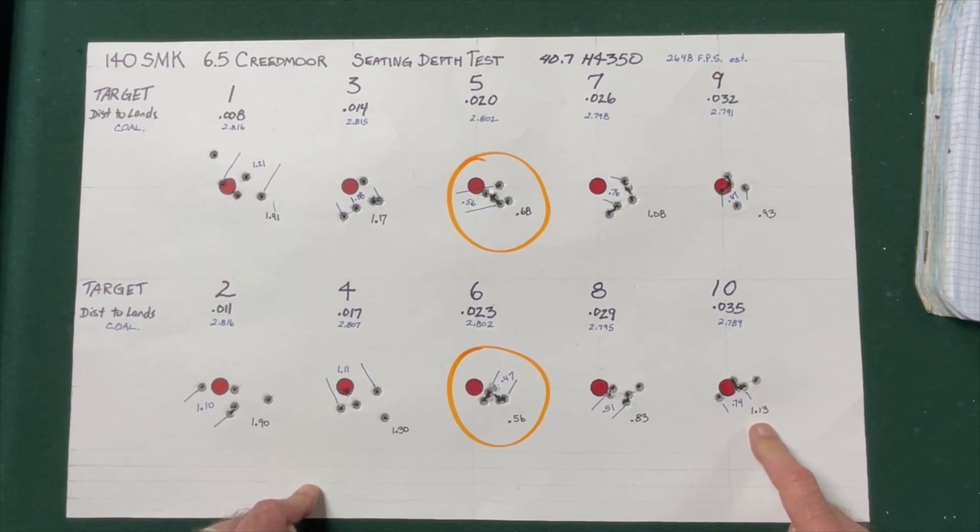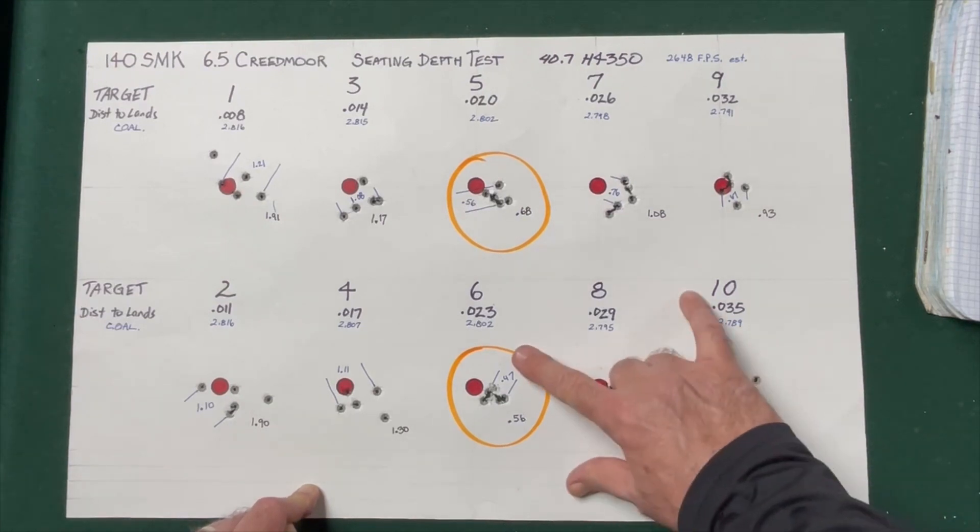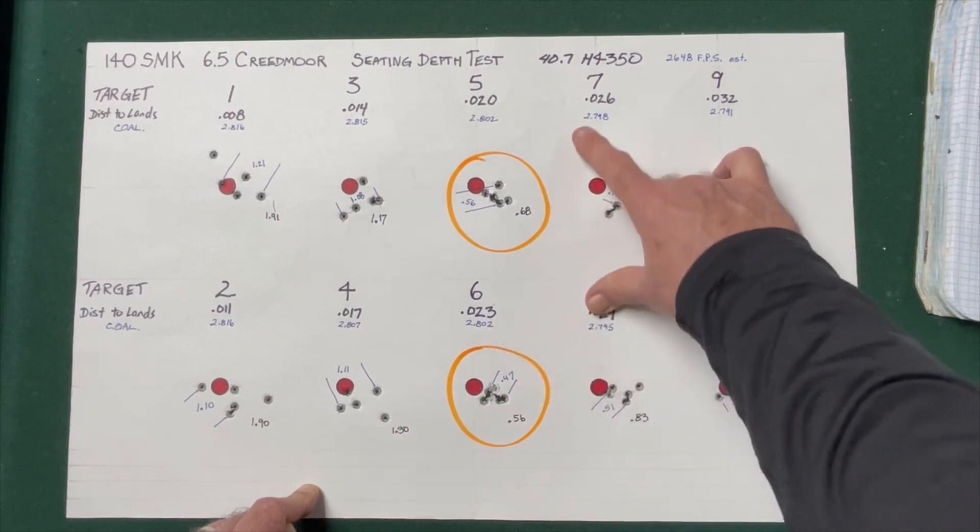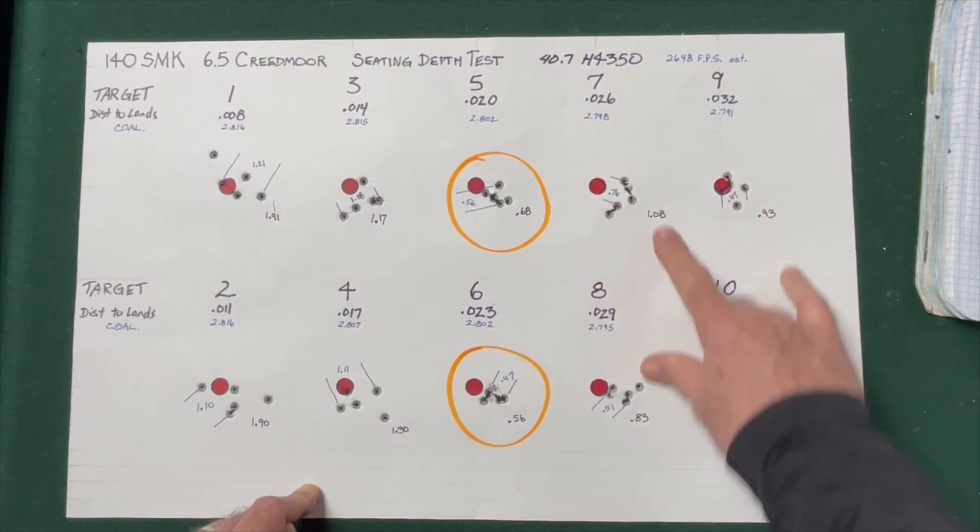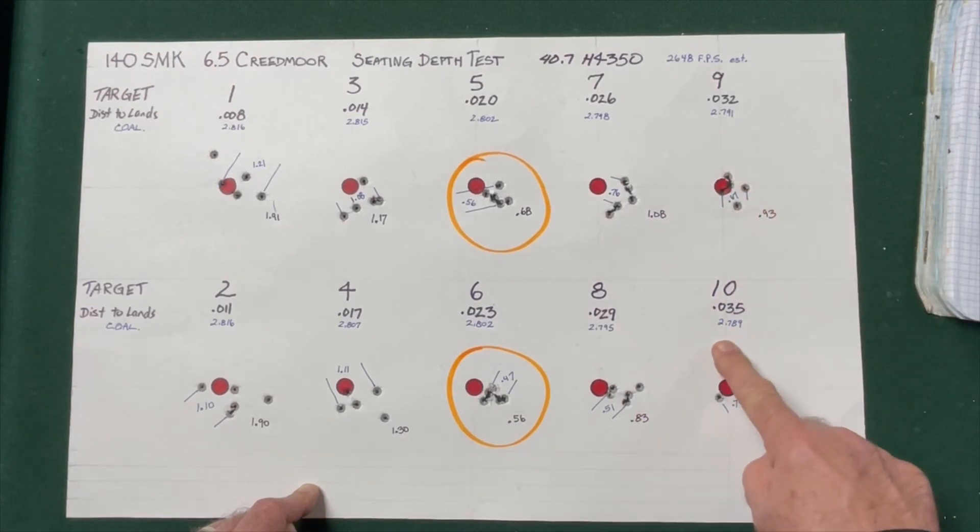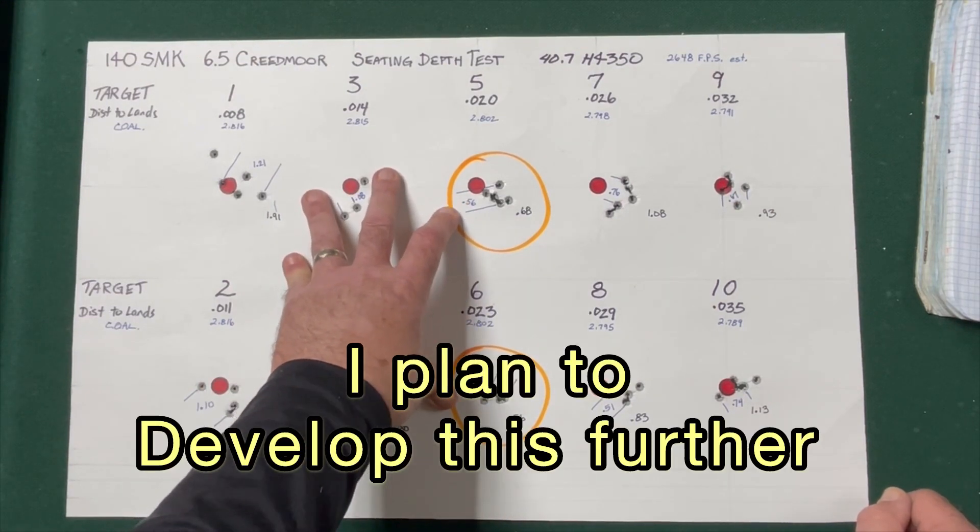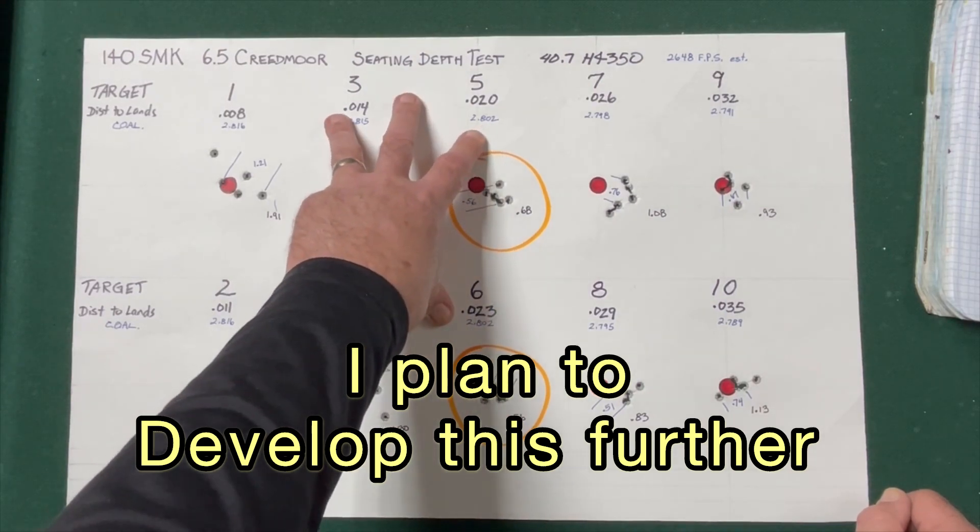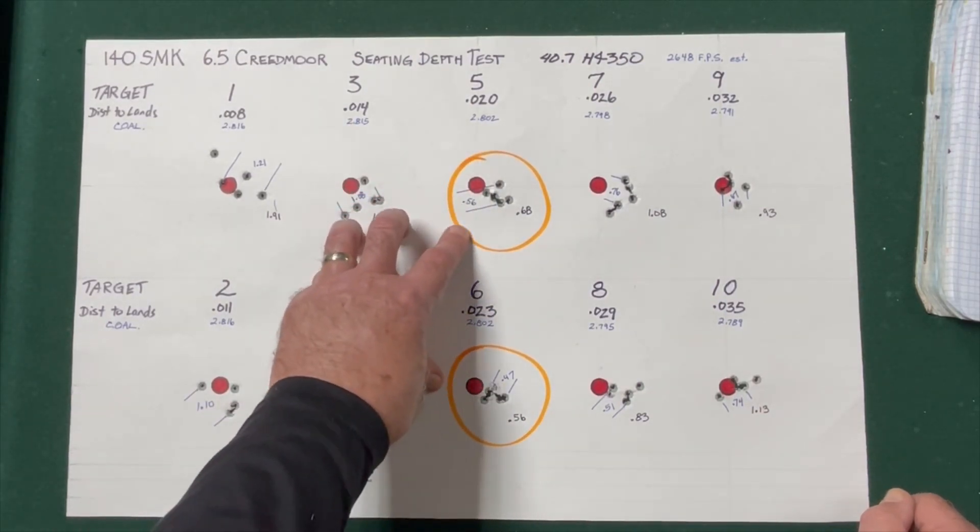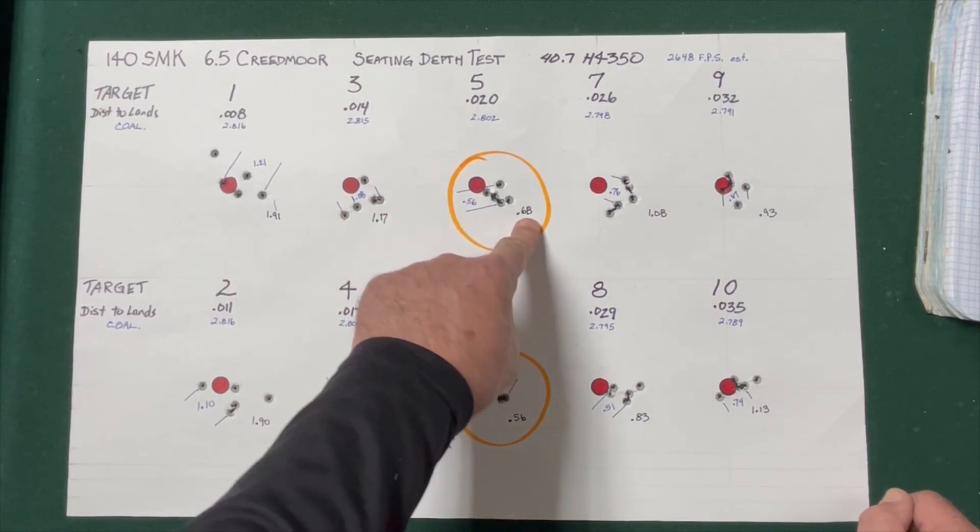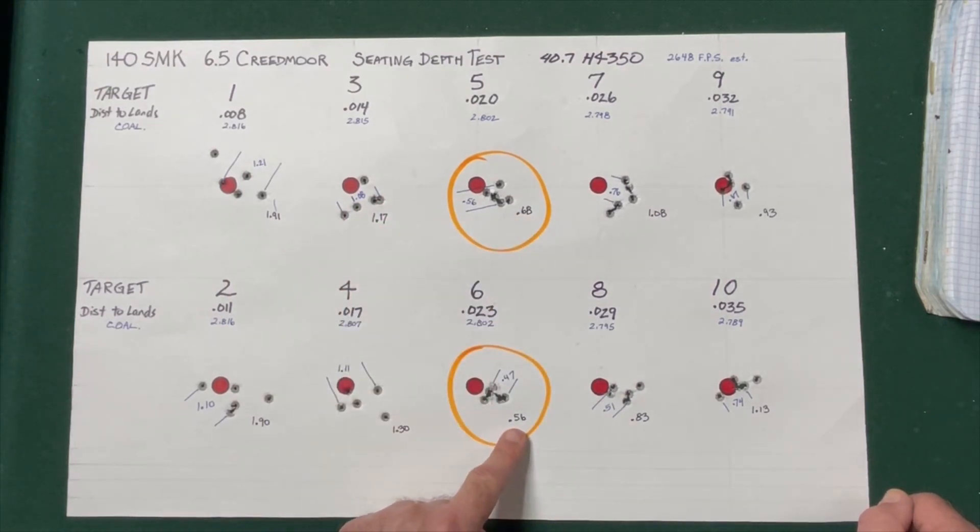It's also interesting to note that as you get further away from the lands, that overall cartridge length gets shorter, because here we were at 2.802, then it drops to 2.798, 2.795, 2.791, 2.789. In any event, the takeaway here is that it appears that, at least for my rifle, the recommended overall cartridge length produces the best results, and that's at 2.8 inches. So I will be loading that in the future, but that did give us groups of 0.68 inches and 0.56 inches.